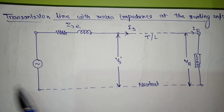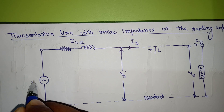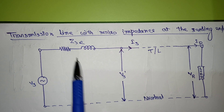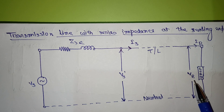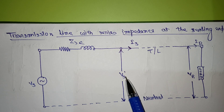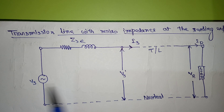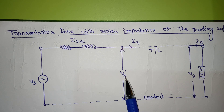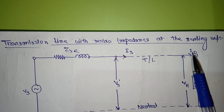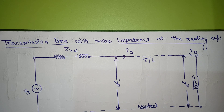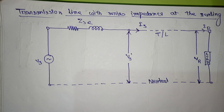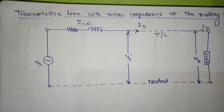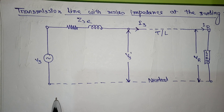We have given the sending end voltage Vs, and this is the Zse — the impedance. This is the sending end current. We have written here VR, and we have written Vs test to make a difference between these two sending end voltages. This is the transmission line, this is the receiving end current, this is the load, and this is the neutral.